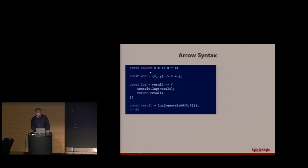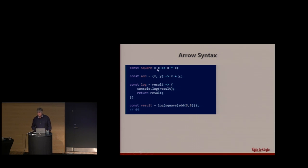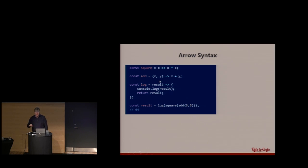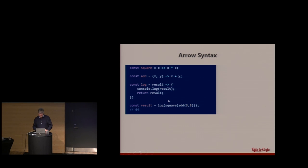This is a function definition called `square`. I'm assigning a function definition to a variable square — it's a function where it takes one parameter X that goes to the expression X times X. Just like in C#, you don't need curly braces, you don't need a return statement, and of course it's JavaScript so you don't need types. I now have a function I can invoke and pass in the number 3, and it will return 9. Here's a function definition that takes two parameters: if you have more than one parameter or zero parameters, the parentheses are required around the function signature. So two parameters X and Y go to the expression X plus Y.